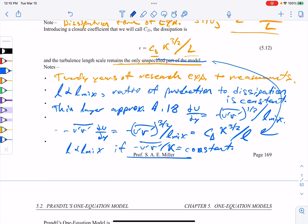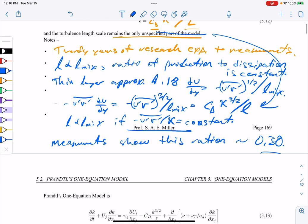And so what does that mean? We can write L goes as L mix, as I mentioned already, if negative u prime v prime bar over k is a constant in terms of the modeling. And that actually turns out to be a really good approximation for shear layers and boundary layers that are kind of moderate speeds and subsonic, mild compressibility. And it turns out measurements show that this ratio or constant is about 0.30, or about a third. And that's true for thin shear layers and boundary layers.